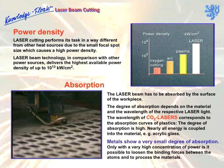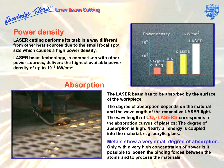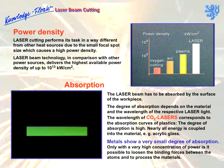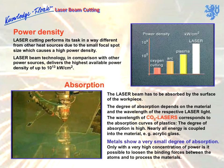The laser beam must be accepted by the surface of the workpiece. In physics terminology, this means the beam must be absorbed. The degree of absorption depends on the material and the wavelength of the respective laser light. For example, the wavelength of the CO2 laser beam is well suited to the absorption curves of most plastics. The degree of absorption is high, and all of the energy is coupled in. This explains why acrylic glass can be cut extremely well with a CO2 laser.